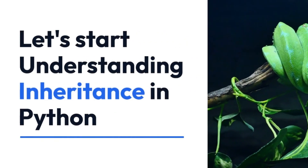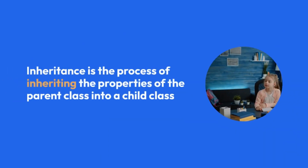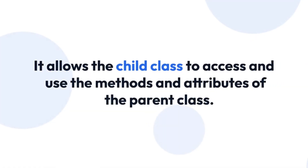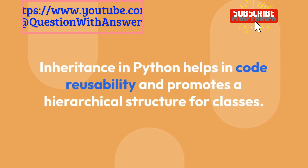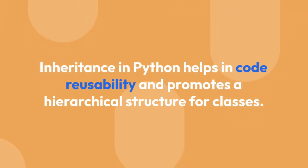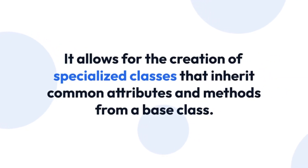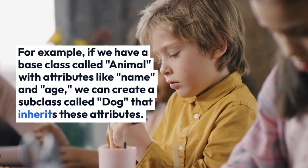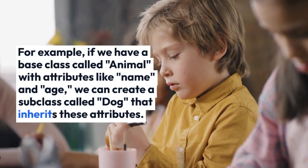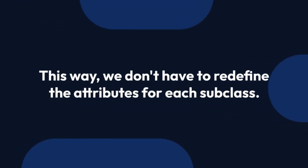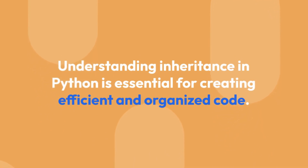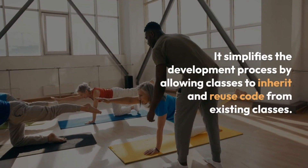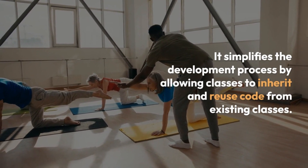Let's start understanding inheritance in Python. Inheritance is the process of inheriting the properties of the parent class into a child class. It allows the child class to access and use the methods and attributes of the parent class. Inheritance in Python helps encode reusability and promotes a hierarchical structure for classes. It allows for the creation of specialized classes that inherit common attributes and methods from a base class. For example, if we have a base class called Animal with attributes like name and age, we can create a subclass called Dog that inherits these attributes — we don't have to redefine the attributes for each subclass. Understanding inheritance in Python is essential for creating efficient and organized code, simplifying development by allowing classes to inherit and reuse code from existing classes.